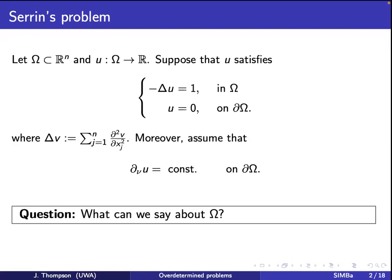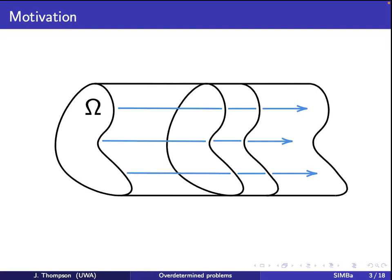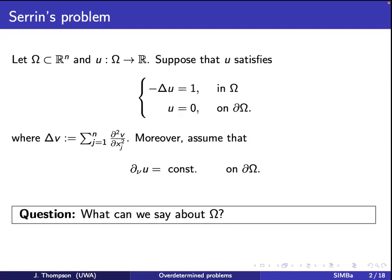This problem was addressed by James Serrin, who proved that omega must be a ball. The motivation came from fluid dynamics: he had a pipe where omega was a cross-section with laminar flow through it. In this context, n was 2, u was the streamline function, and u satisfies these conditions — which referred to the stress on the side of the pipe. This was a condition for the strongest pipe.